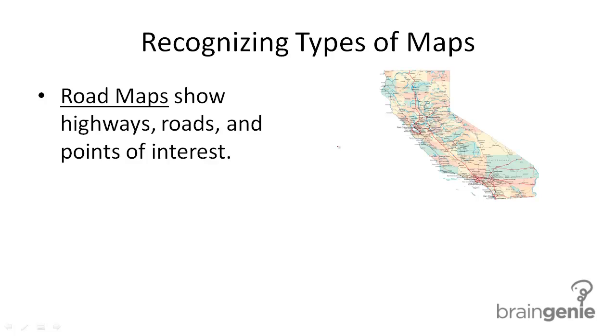Road maps are maps you might use if you were going on a trip, if you were going on a drive. These are the maps that show you where highways, roads, and points of interest are.